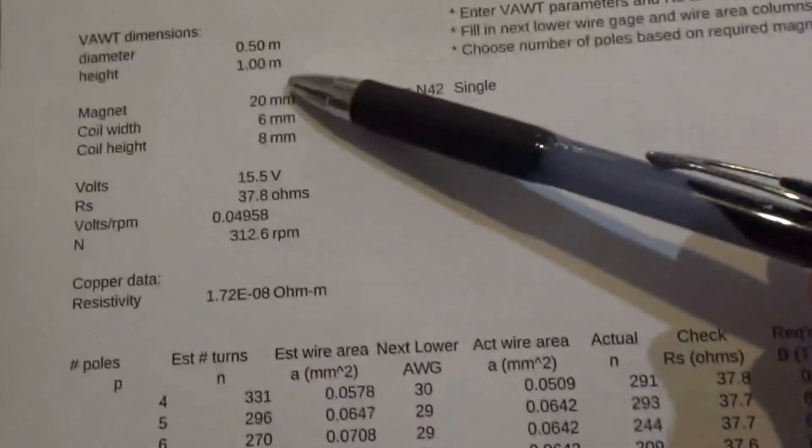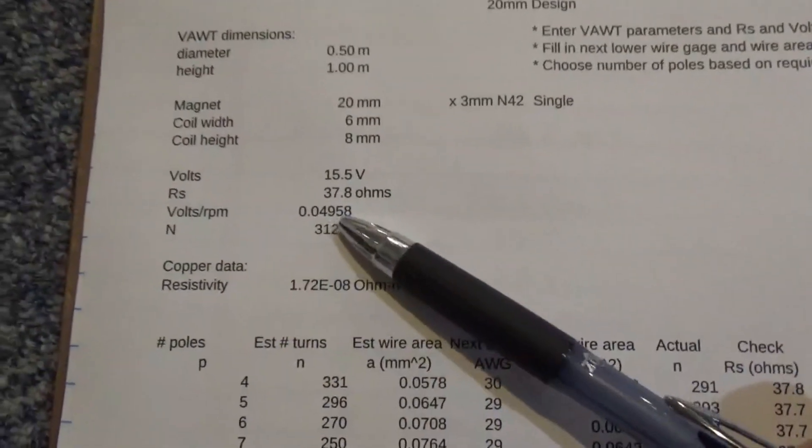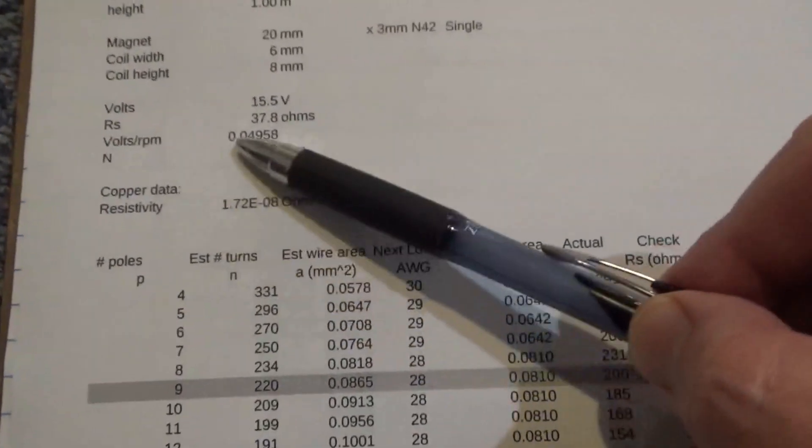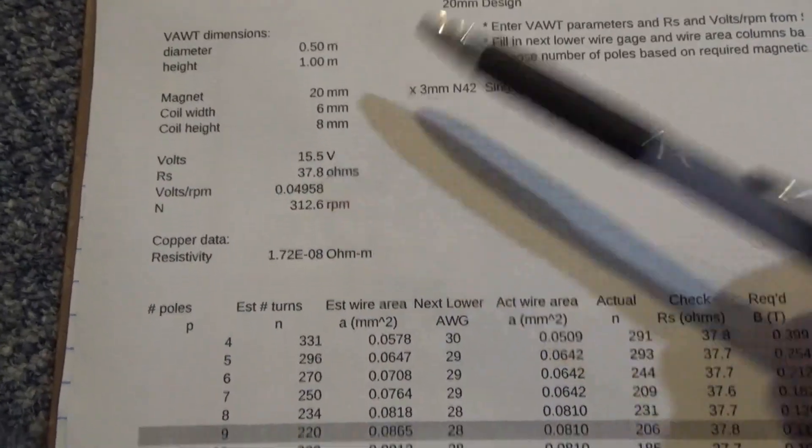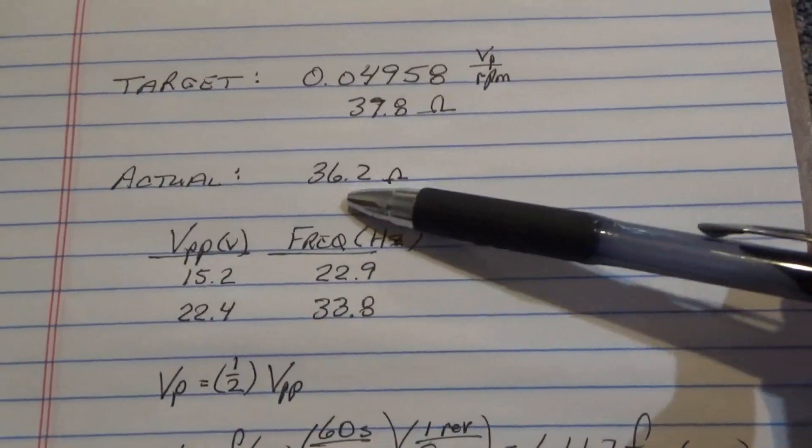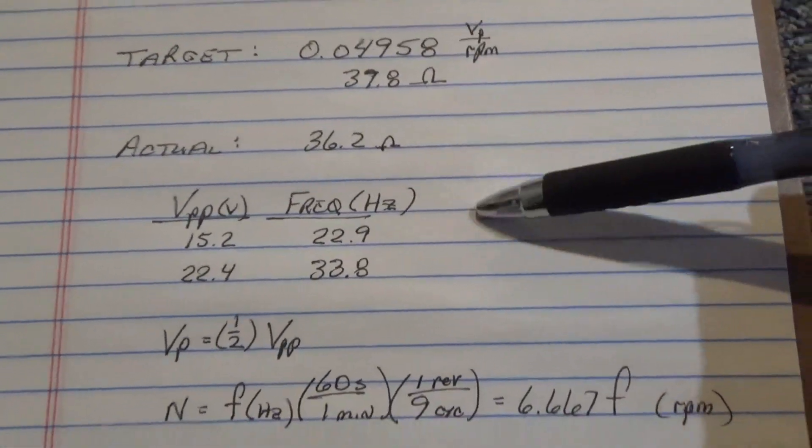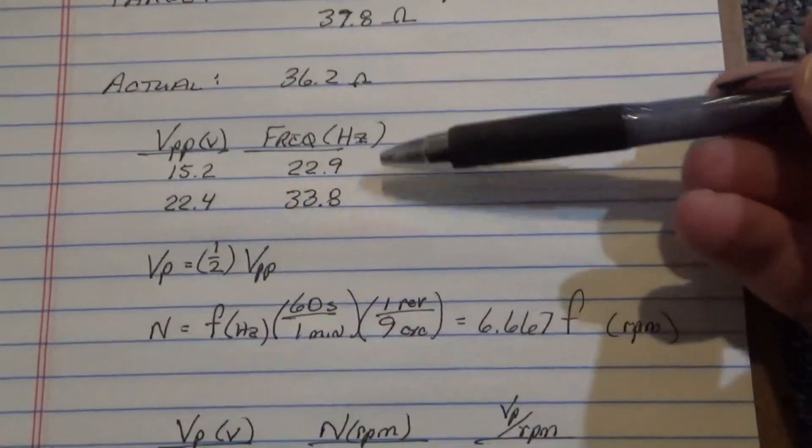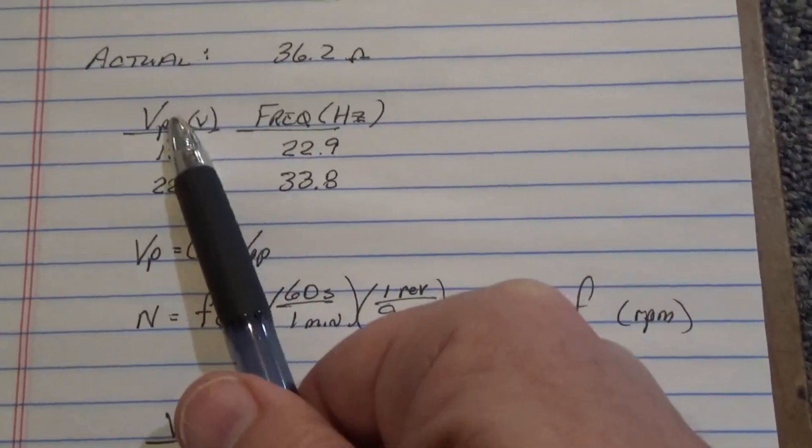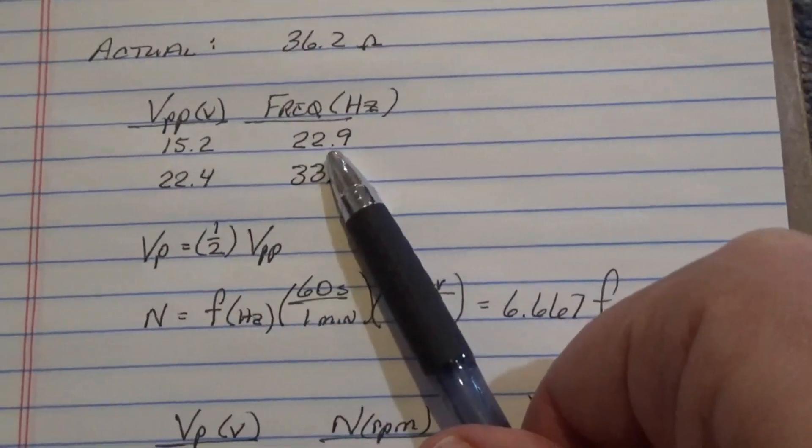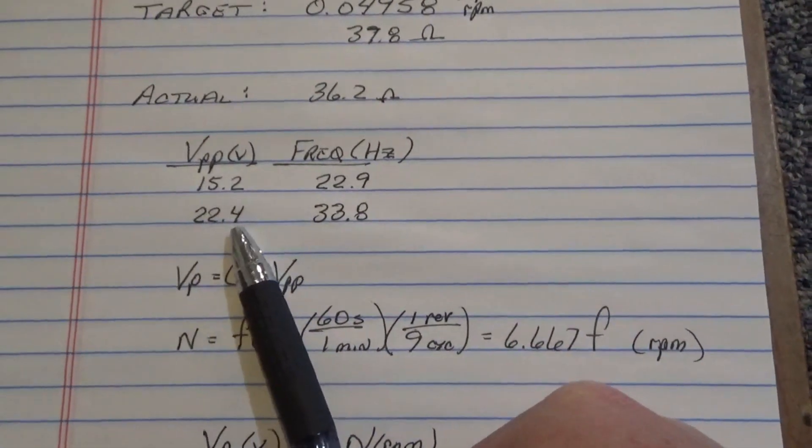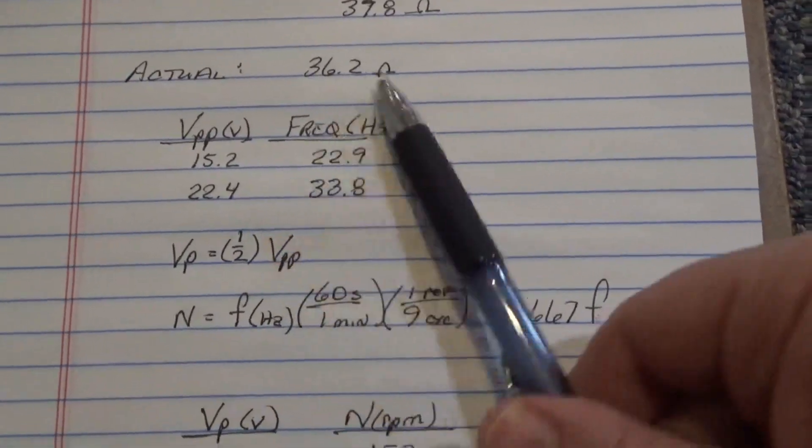When designing the generator, I had a target of 0.04958 volts per RPM. And, let's see, the resistance, state of resistance, 37.8 ohms. And so those were the targets. The actual resistance I got was 36.2. So it's a little bit low. Then we just checked the generator on the oscilloscope. And I ran it once and it was 15.2 volts peak to peak. Not just the peak. And then it had a frequency of 22.9 hertz. I just spun it one more time and got 22.4 volts peak to peak with 33.8 hertz. So I just spun it a little faster.